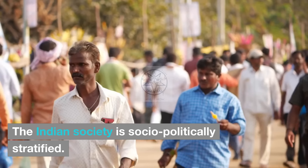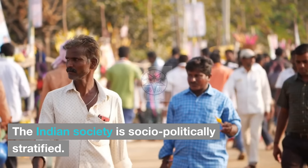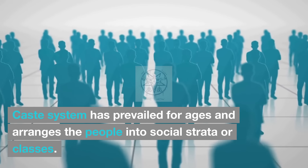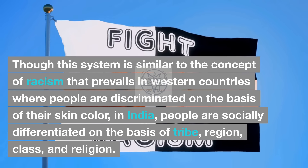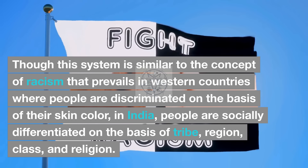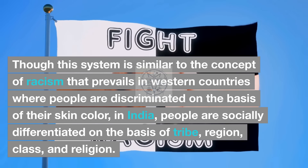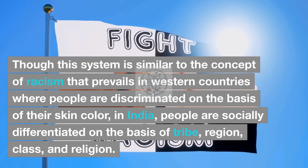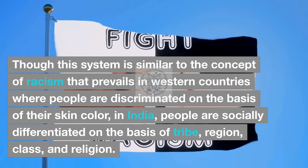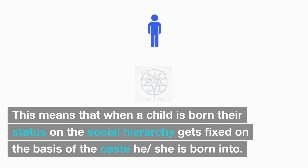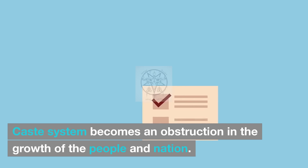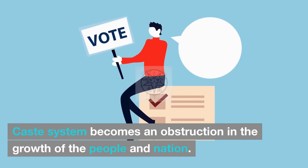Caste system in India. The Indian society is socio-politically stratified. Caste system has prevailed for ages and arranges people into social strata or classes. Though this system is similar to the concept of racism in western countries where people are discriminated on the basis of skin color, in India people are socially differentiated on the basis of tribe, region, class, and religion. This means that when a child is born, their status on the social hierarchy gets fixed based on the caste they are born into. Caste system becomes an obstruction in the growth of the people and the nation.